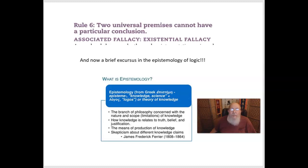Greetings, students. I'm going to pick up exactly where we left off last time, considering Rule 6, that two universal premises cannot have a particular conclusion, and that if a syllogism makes that mistake it's called the existential fallacy. I also said that to understand the philosophy behind that, we're going to need to do a little excursus into the epistemology of logic.